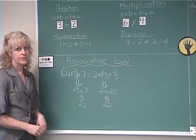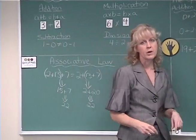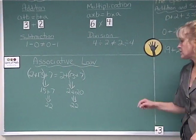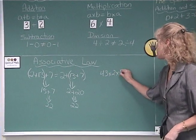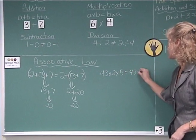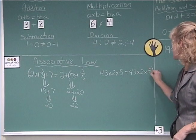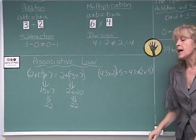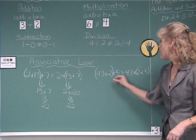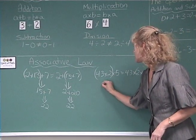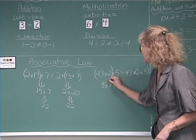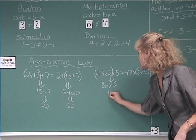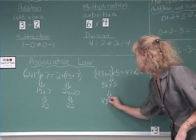So the associative law also works for multiplication. In multiplication, I'll give you an example of 43 times 2 times 5. If you put brackets in different places, you will still get the same answer. Again, for ease of calculation, 43 times 2 is 86. You can multiply that by 5. If you calculate that again, that will give you 430.